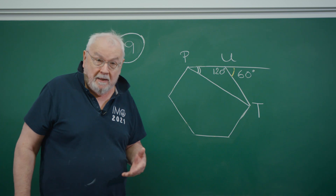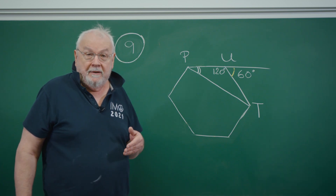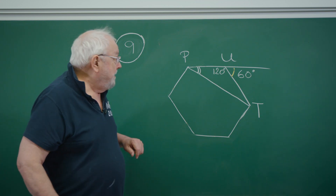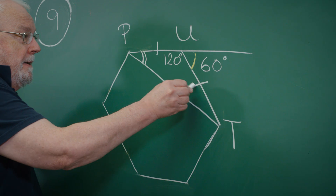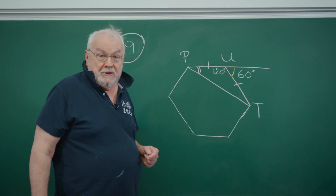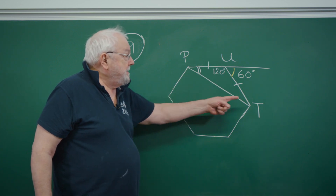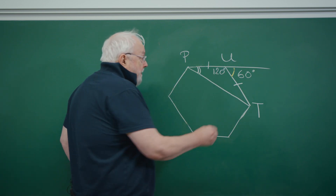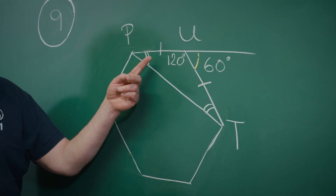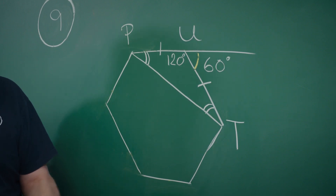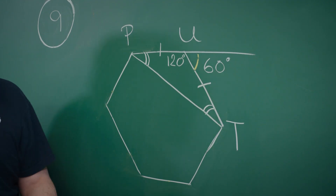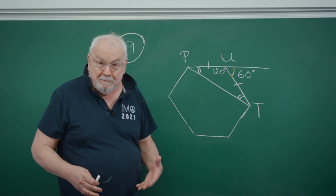This is a regular hexagon, which means all angles are equal and all sides are equal length. PU and UT have the same length, so suddenly we have an isosceles triangle on our hands — triangle UPT with equal base angles. All three angles add up to 180, so the two base angles together must be 60, and since they're equal to each other, each of them must be 30 degrees.